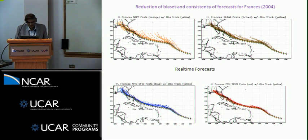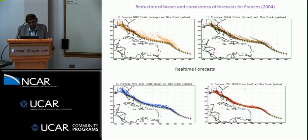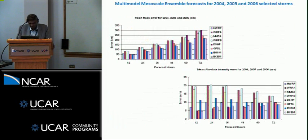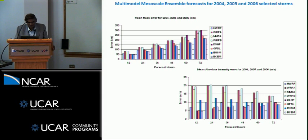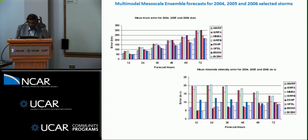For Hurricane Francis, the kind of track forecast — a right bias and so forth — was considerably reduced by the super ensemble. This was typical of forecasts made in 2004. In the mesoscale, Naomi provided some data sets and we put together a number of models. Our experience was very similar: even for the mesoscale models, if the training phase was robust, you could reduce the errors from the construction of the multi-model super ensemble for both track and intensity.